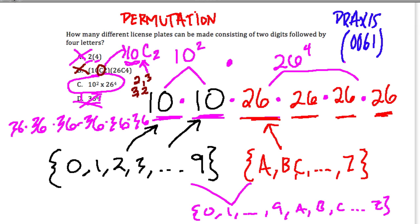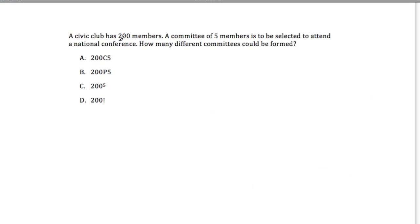Now let's look at some others. So a civic club has 200 members, and a committee of five members is to be selected. So in this case, order does not matter. If I choose five people, it doesn't matter the order I choose them in because they're all part of the committee.